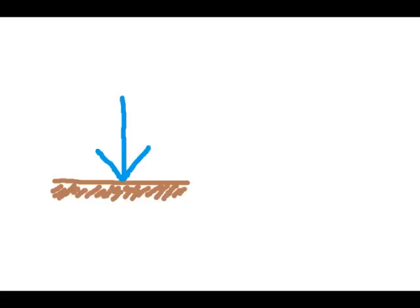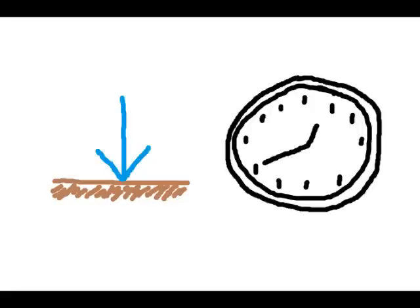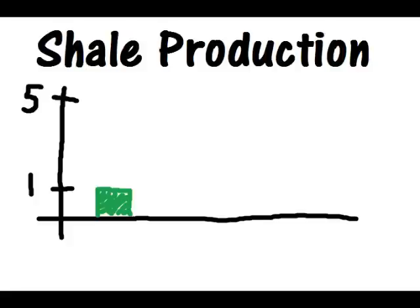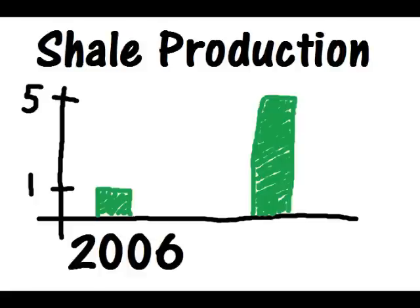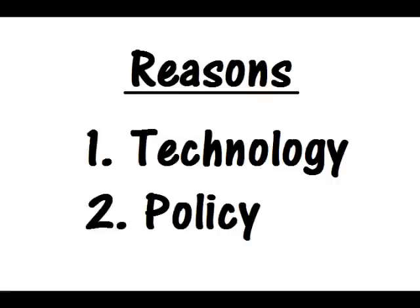Although hydraulic fracturing has been around for many years, only recently has fracking experienced a boom in growth. Gas production from fracking shale rock in the United States has risen five-fold between the years of 2006 and 2010. There are two reasons behind this increase in production: advancements in technology and historical policy.